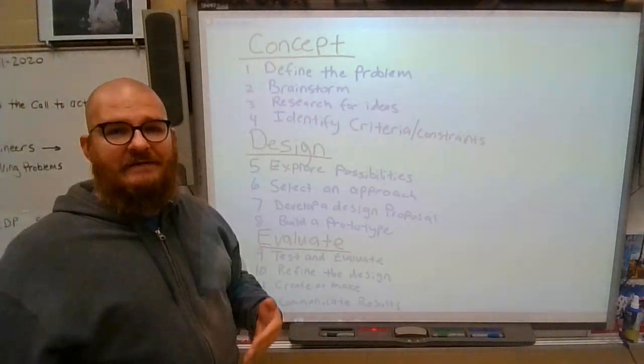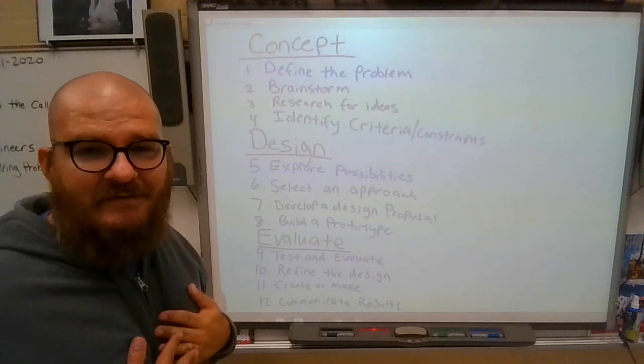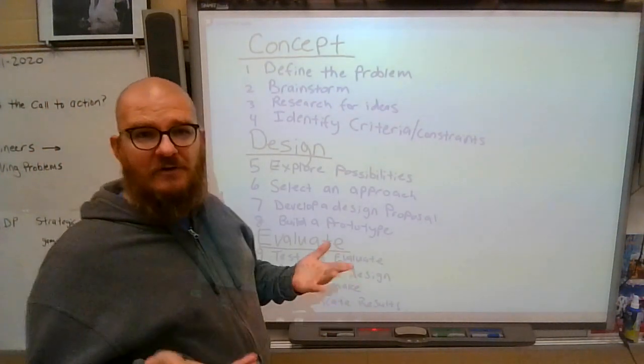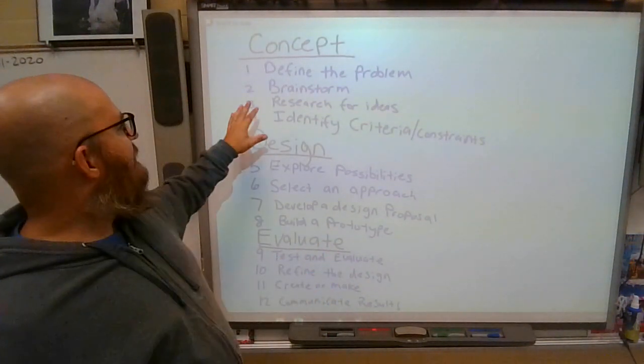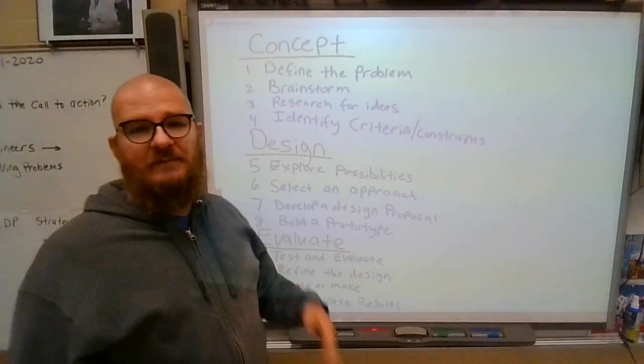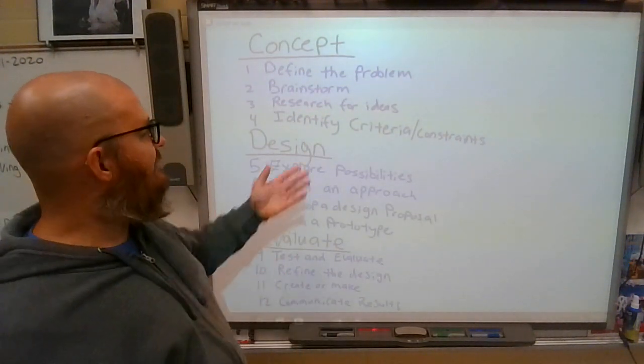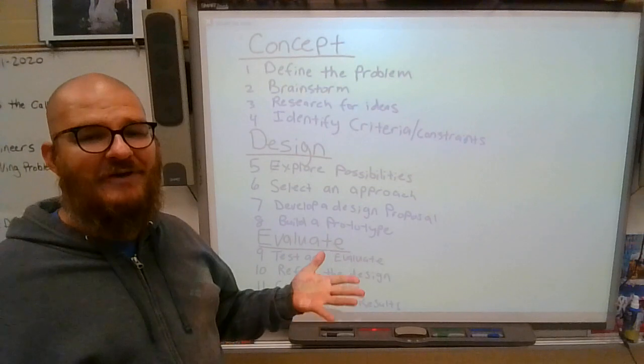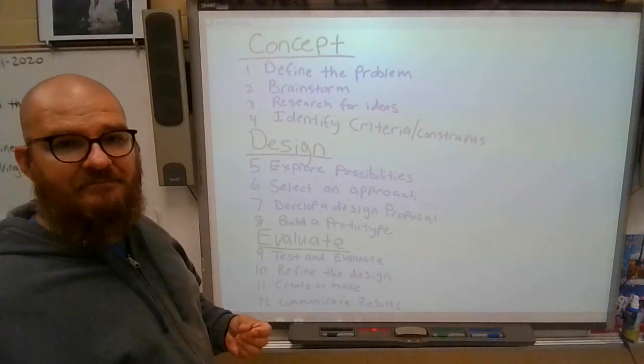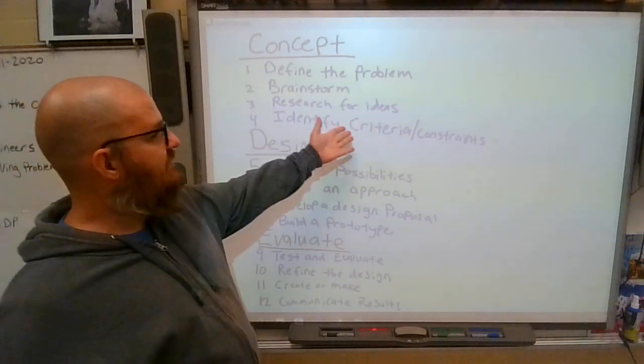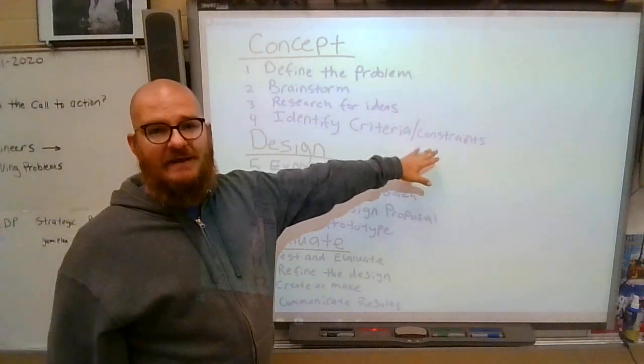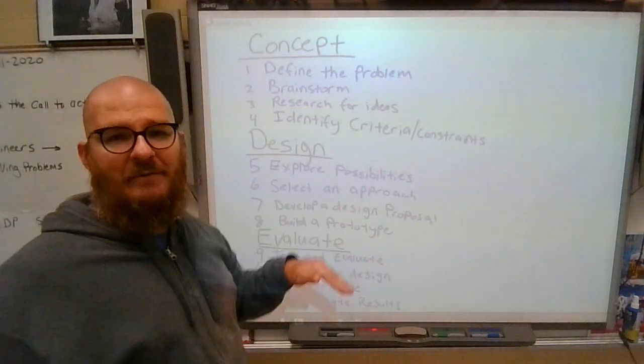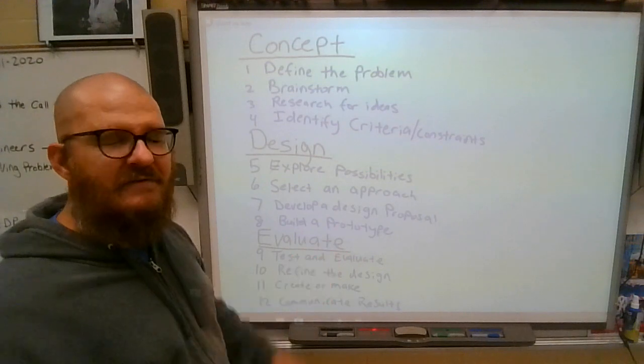Research for ideas. I'm not a paper airplane expert, I'm going to the internet. I'm going to look for some ideas. Then criteria and constraints. Well, I'm going to put a constraint that says for your paper airplane you have to use copy paper because I have tons of it. Scrap copy paper. That is a constraint. I'm not allowing you to use anything else.